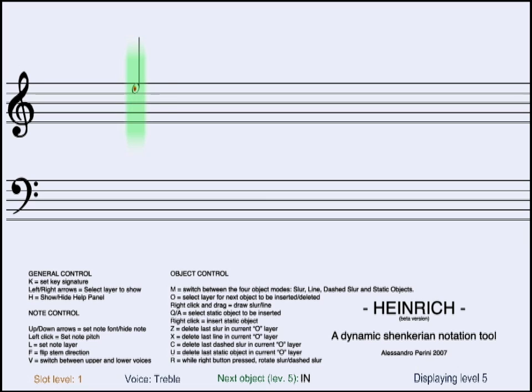Then you can begin writing the notes. We're now drawing the Urlinie on level 1. All the notes and objects that are on level 1 will always be shown. You can add notes by using the up and down arrows to select the different note fonts.